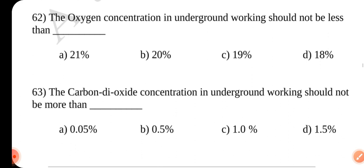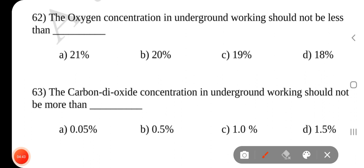Question number 62. Oxygen concentration in underground working should not be less than dash. Answer is C. 19%.